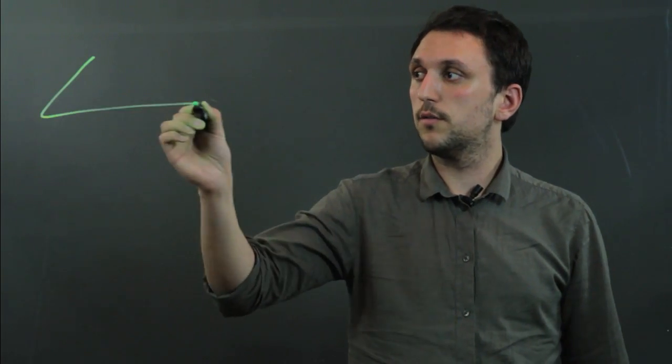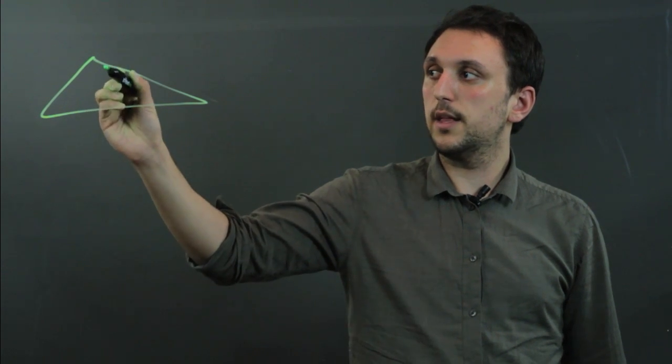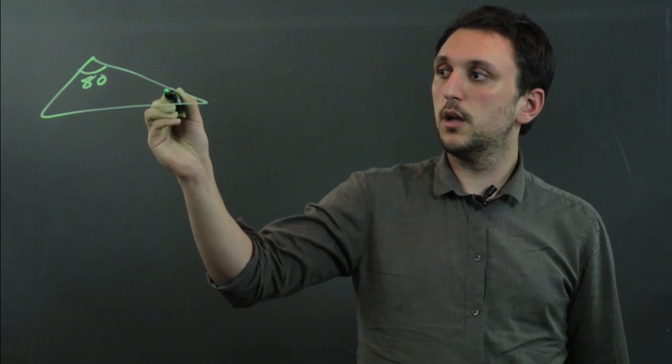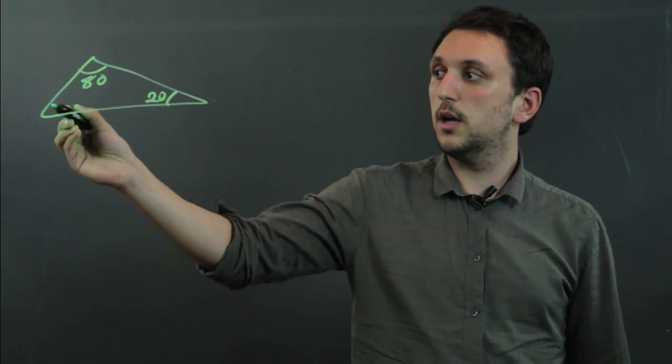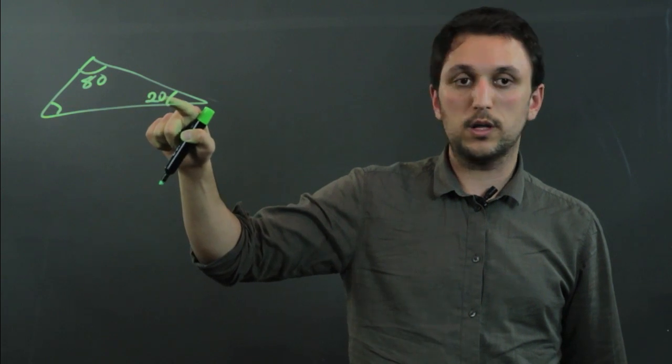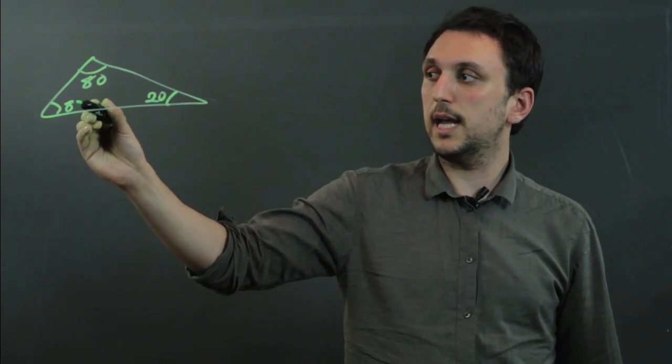So an activity that you can do with triangles is to draw a triangle, for example, like this, and we can say this is about 80, this is 20, and this looks like it's about, well, 80 plus 20 is 100, so this has to be 80 as well.